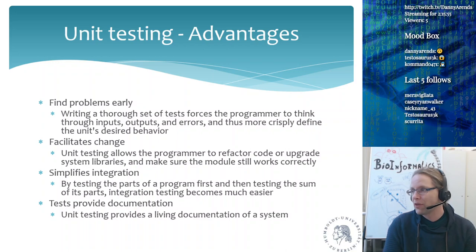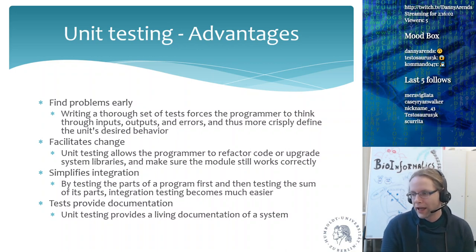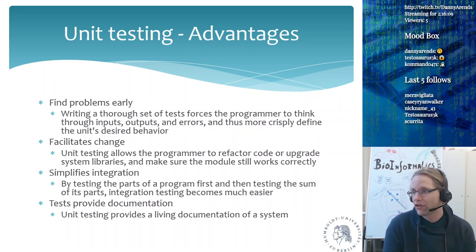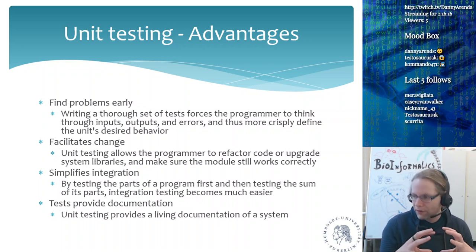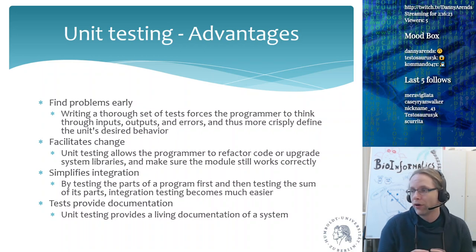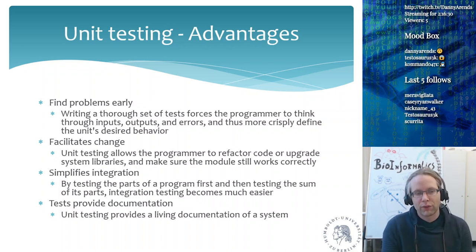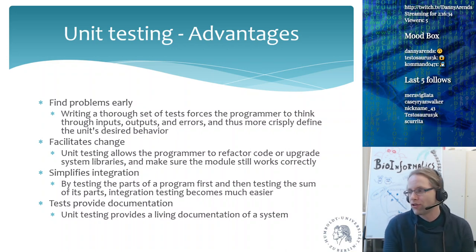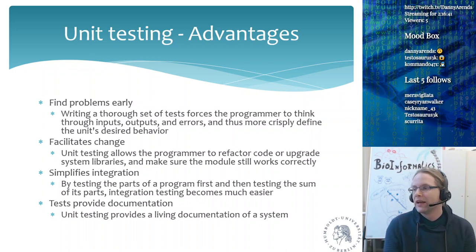Problems only show up when people start using the code and complaining — for example, 'I calculated using version 1.1 and had a significant effect, now I'm using version 1.2 and all my significant effects are gone.' By having a harness around your code that specifies input-output expectations, you can change the code very easily. Another advantage is that unit testing simplifies integration — by testing the parts of a program first and then the sum of its parts, the integration tests you run become much, much easier.